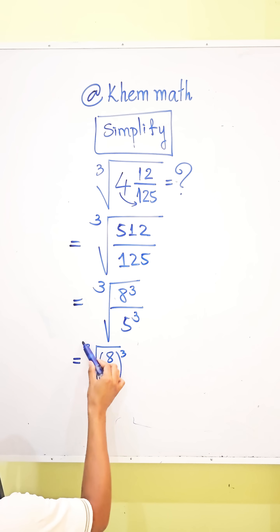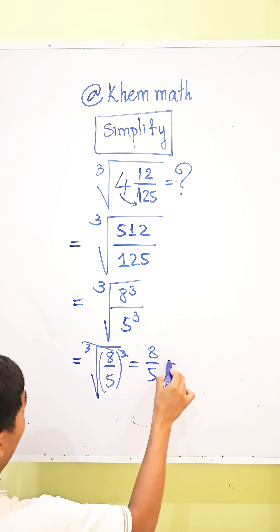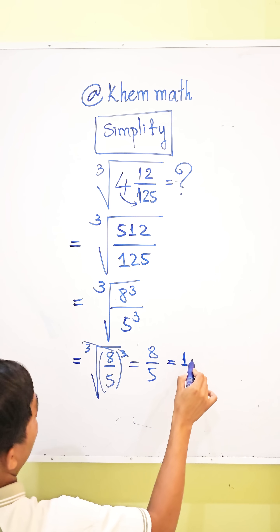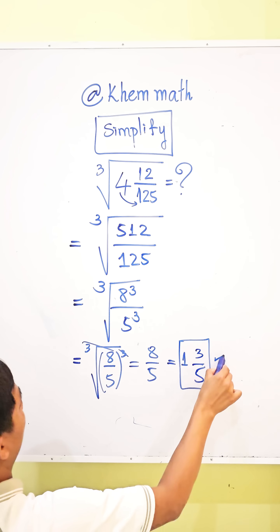And we simplify cube root with cube, we get 8 divided by 5, which equals 1 and 3/5. That is our answer.